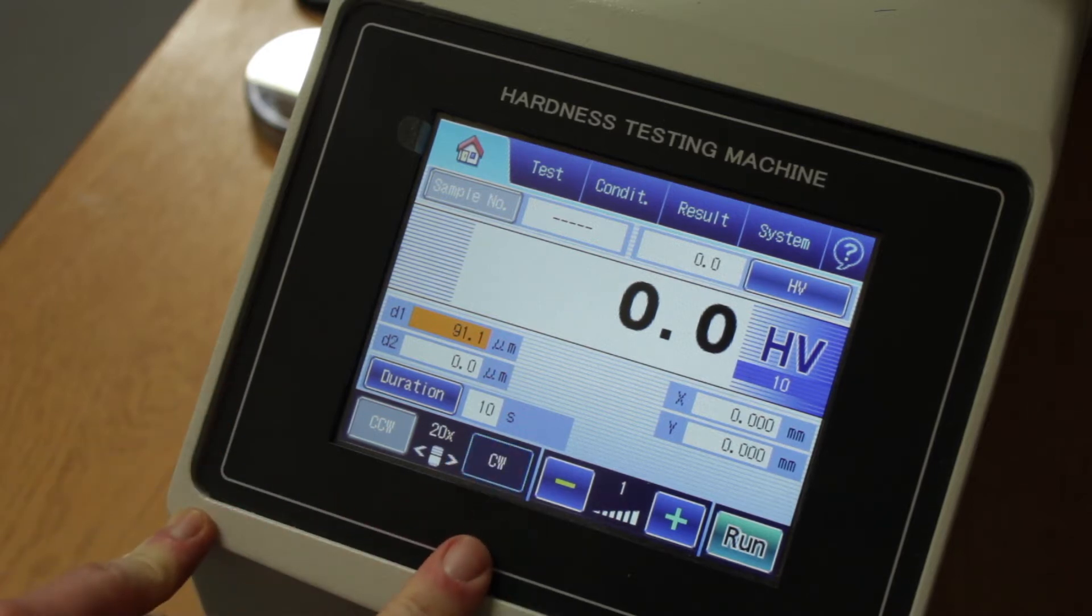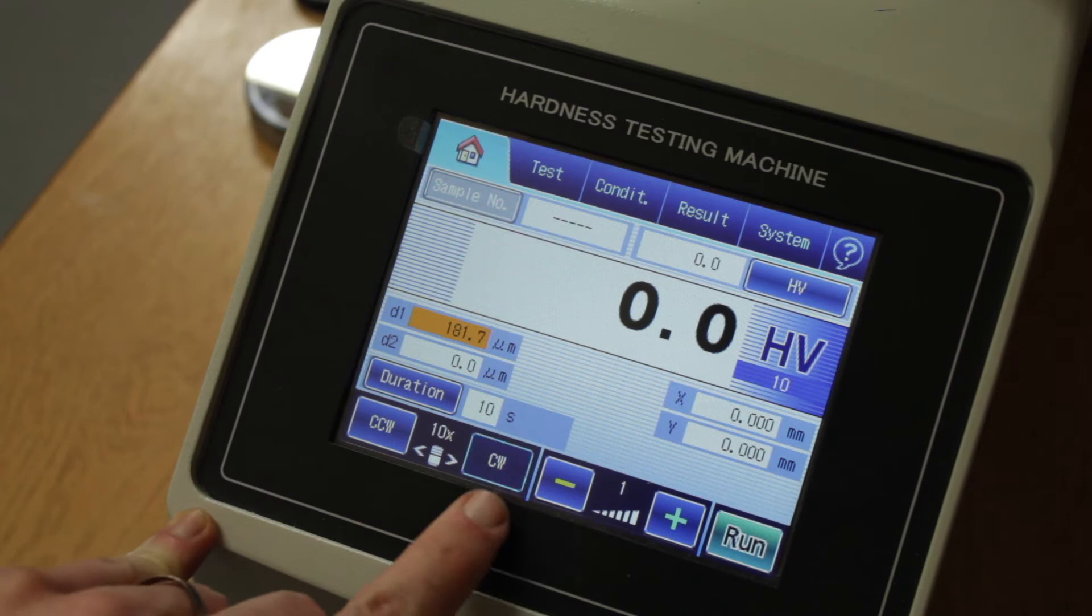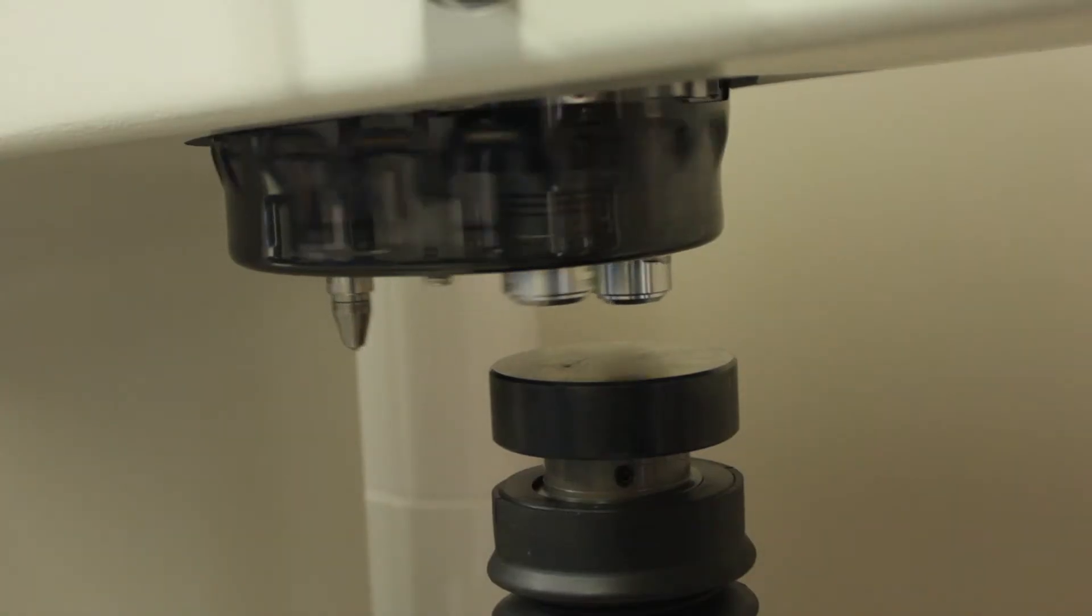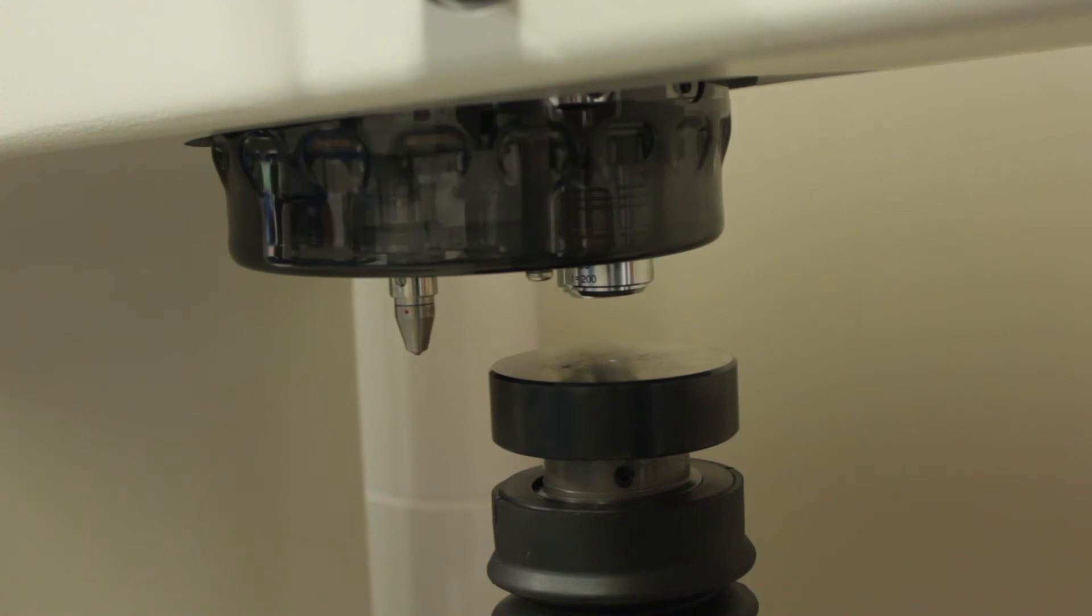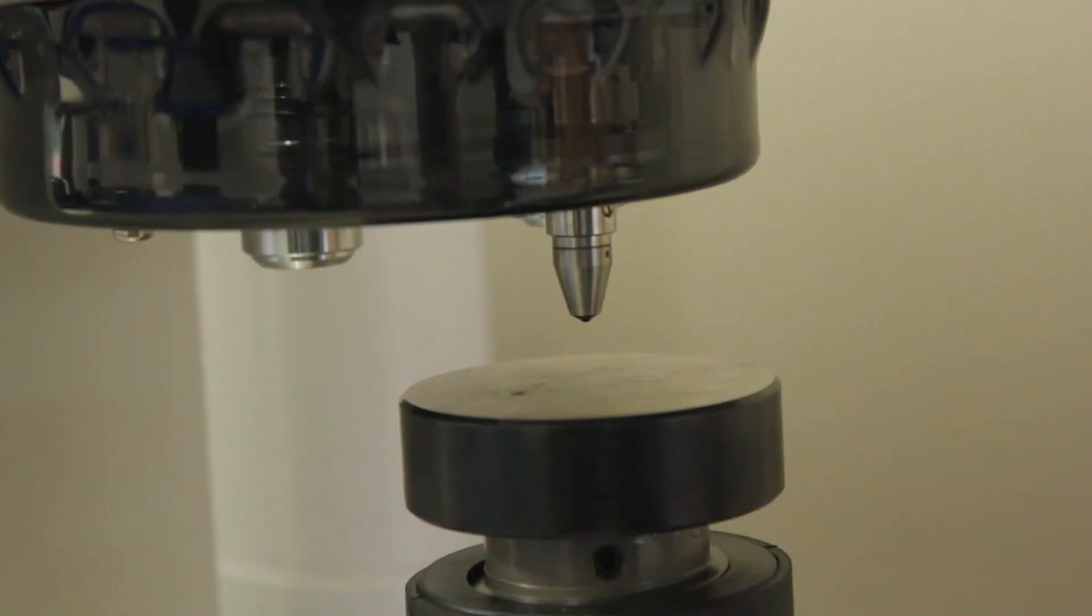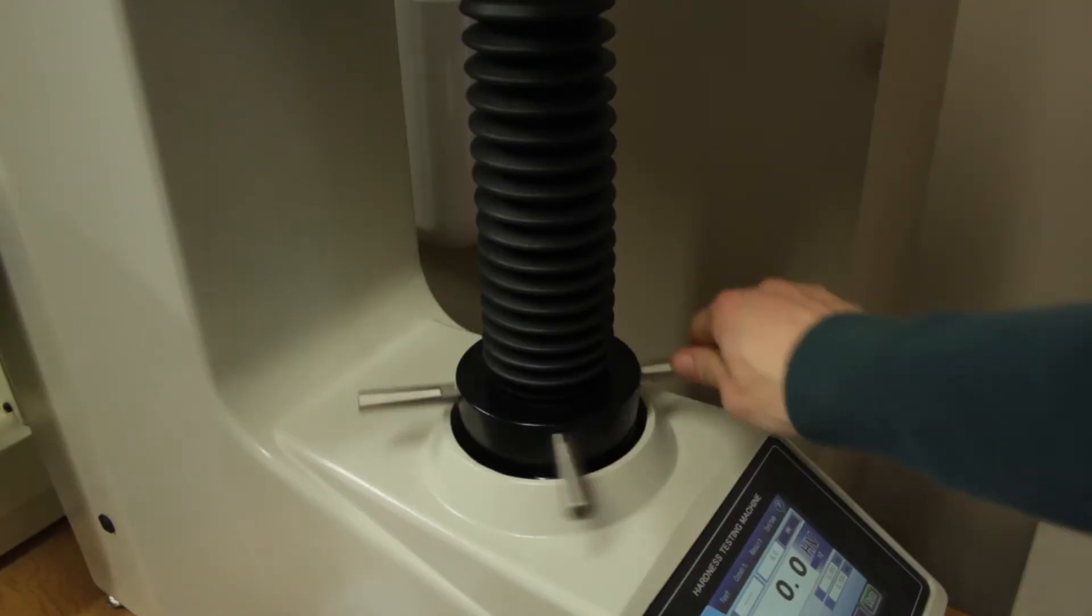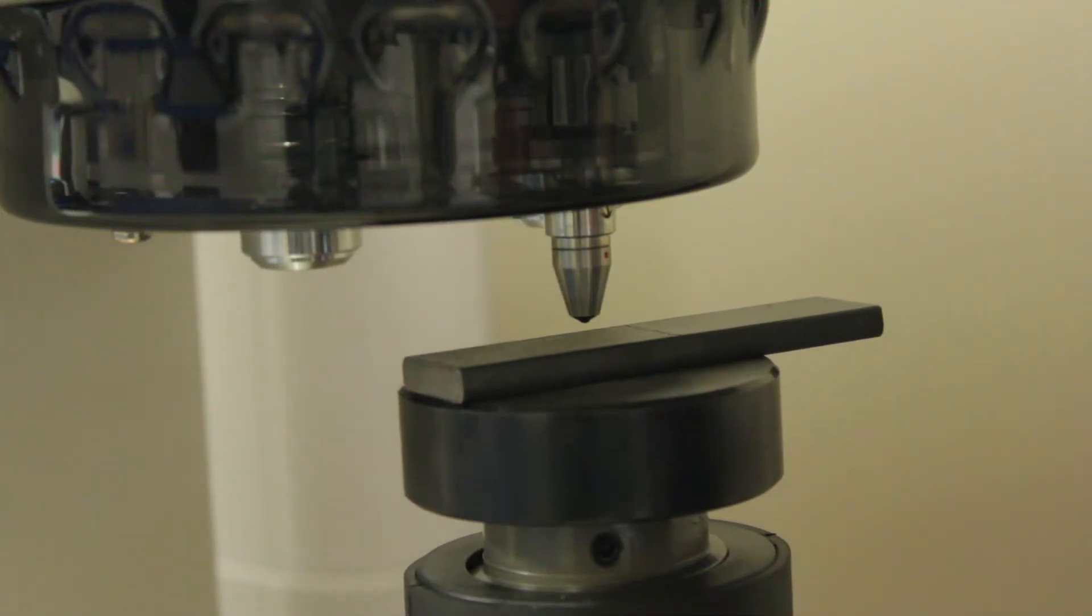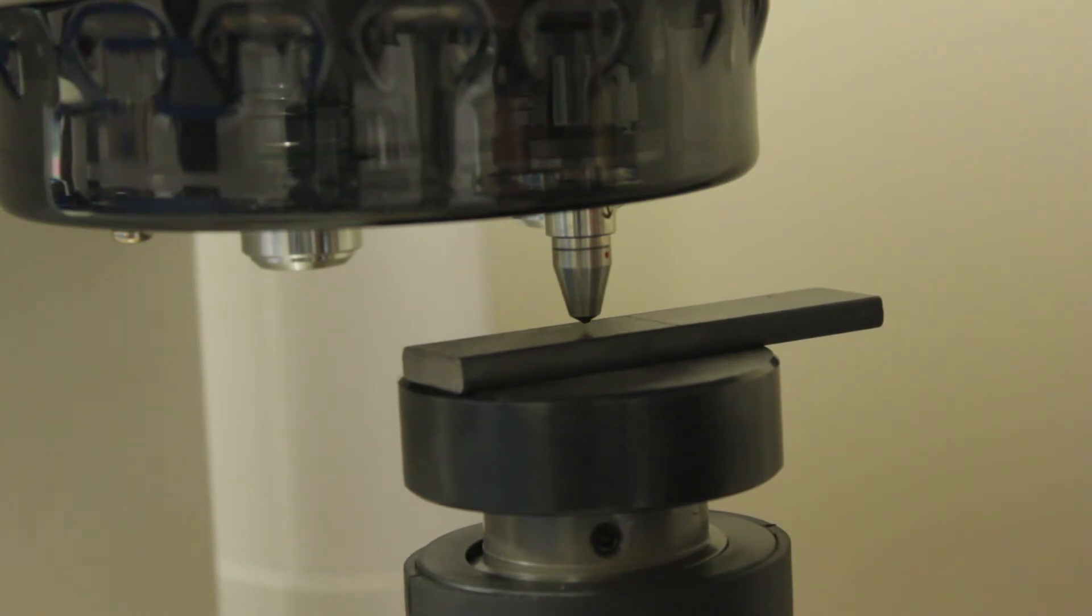Next, hit the counterclockwise and clockwise button to index the turret. To avoid damage to the diamond, ensure there's clearance before indexing. You'll need to index the turret until the diamond tip Vickers Hardness Probe is ready. Place the sample underneath and adjust the slide until the tip is about 1mm above the surface.